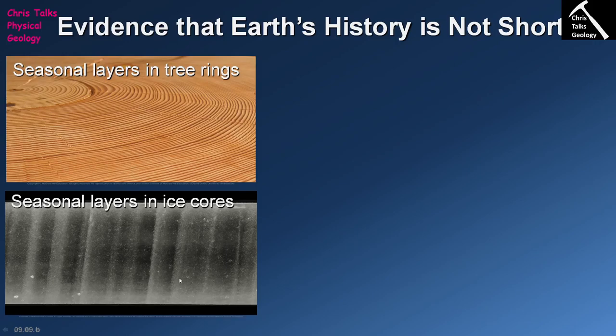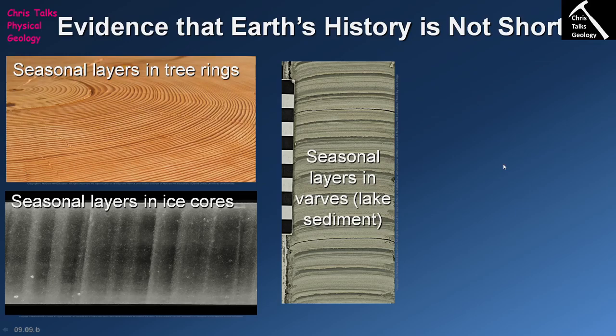These ice cores have lots of bands, and these bands are seasonal in origin. Each lighter-darker couplet represents one year of ice development. When you look at these ice cores you can see hundreds of thousands of years of ice being deposited to produce the ice sheets we see today in areas like Antarctica. This is relatively simple evidence that clearly shows the earth is a lot older than people originally thought.